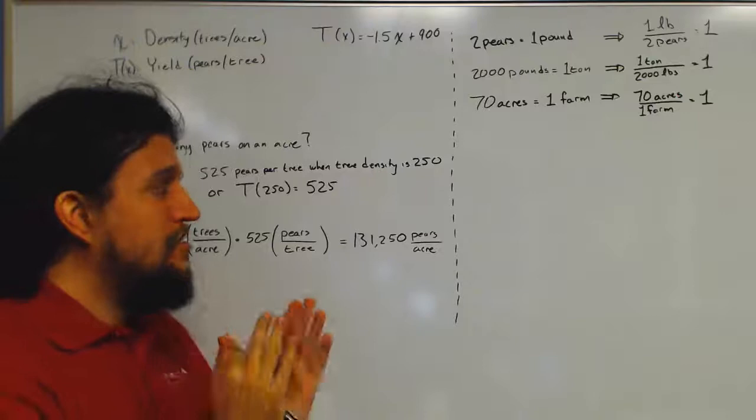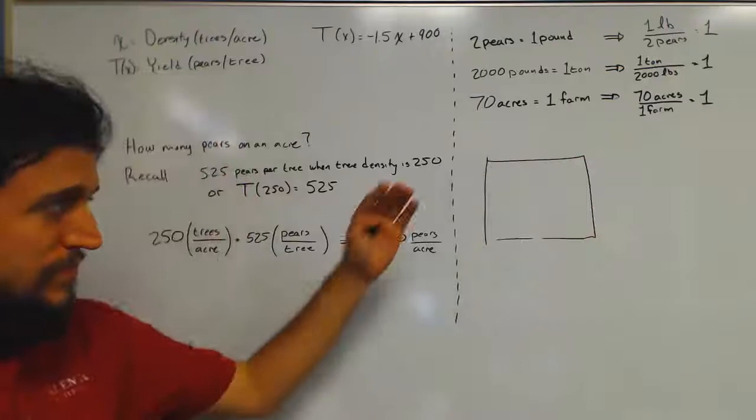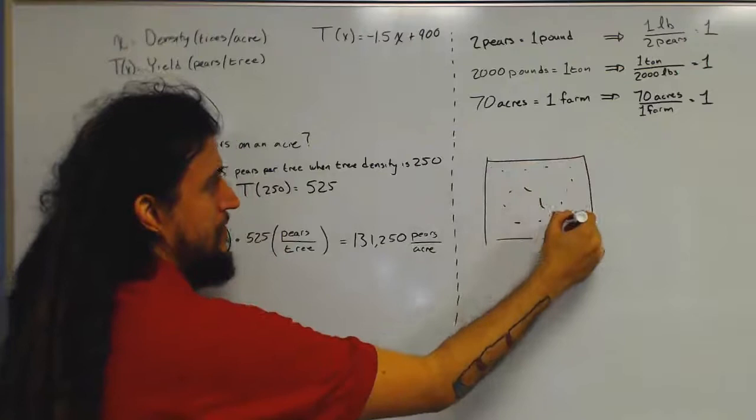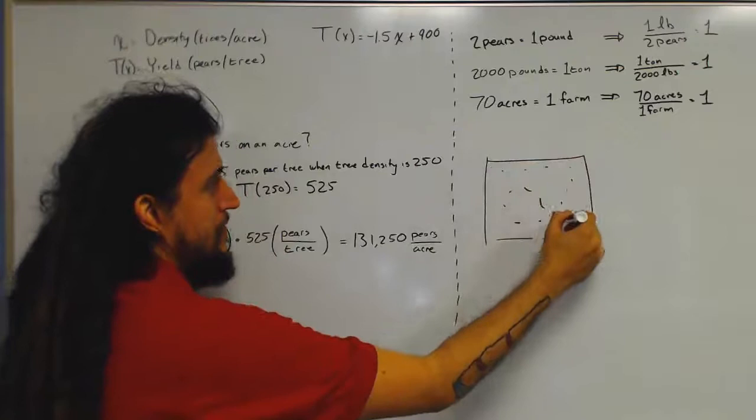So what we have here, just think of it like this, this is just a single acre on our farm and each of these dots represents a tree. And so each of these trees has its own number of pairs, that's what's given by this equation right here.